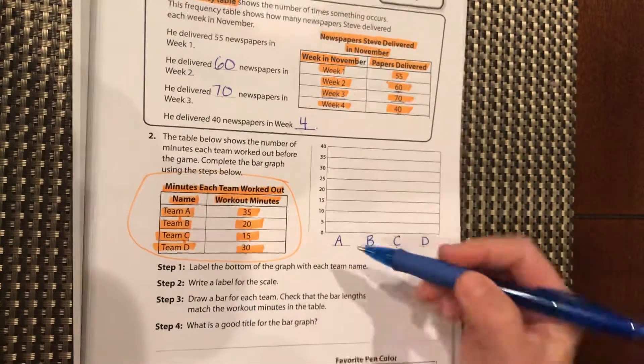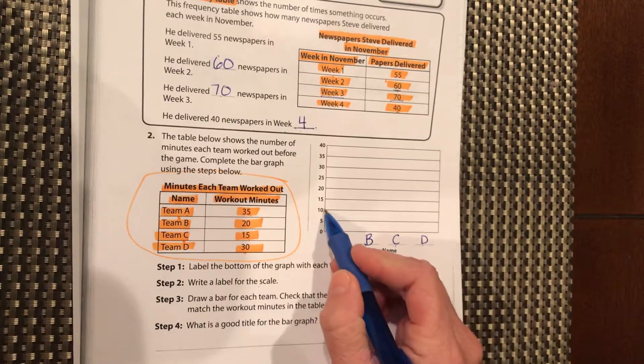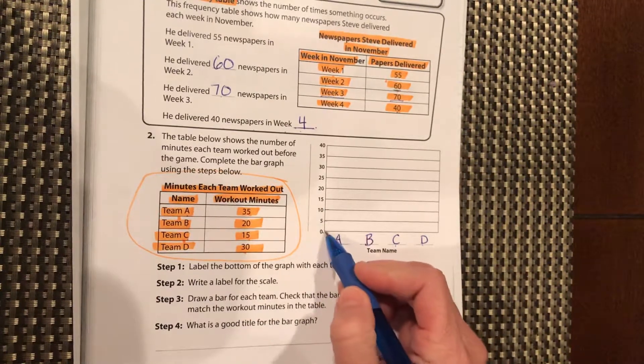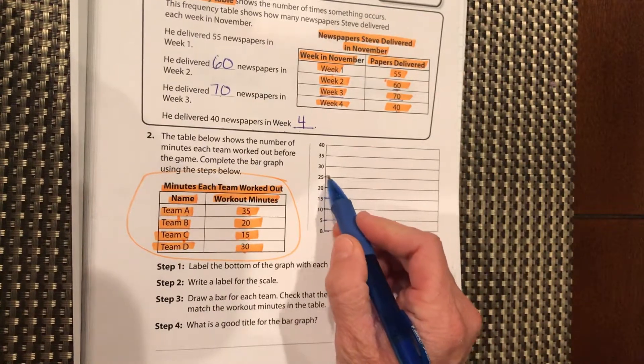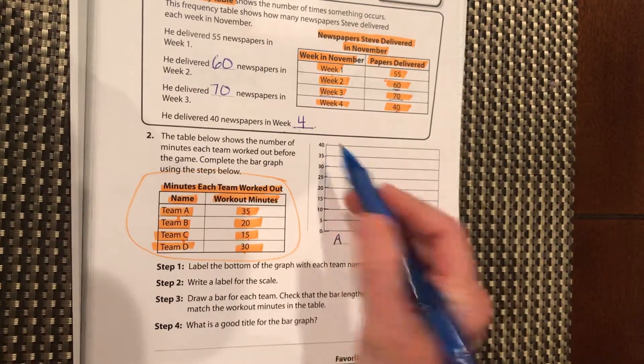Write a label for the scale. This is our scale. Each line represents five minutes. You can see zero minutes, five, 10, 15, 20, 25, 30, 35, 40.